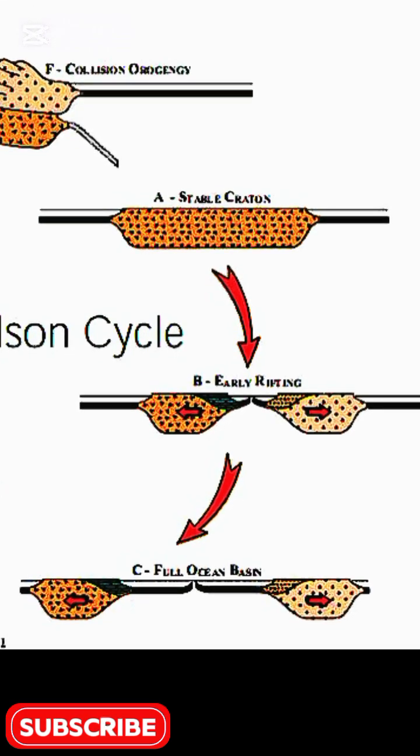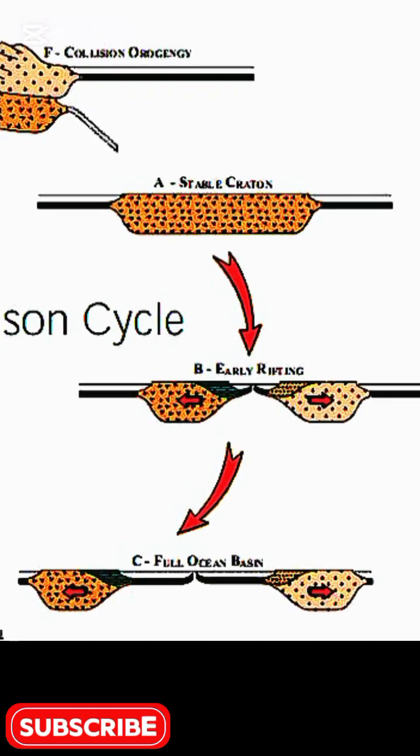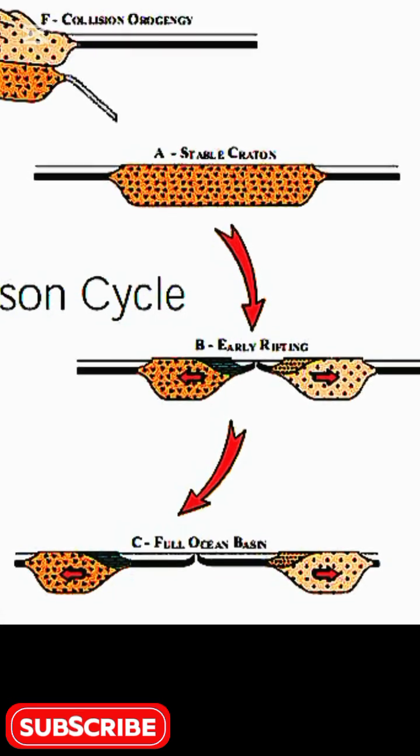From stage A to stage B, rifting occurs. Here the continent stretches and cracks open. A modern example is the East African Rift, where Africa is slowly splitting apart.